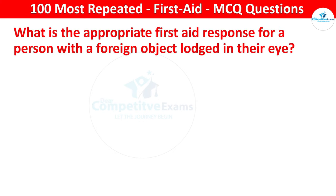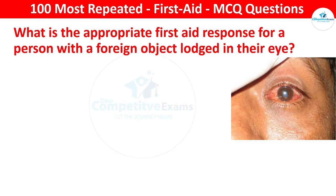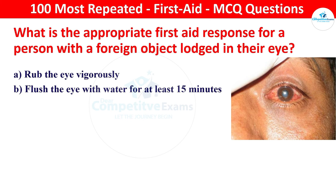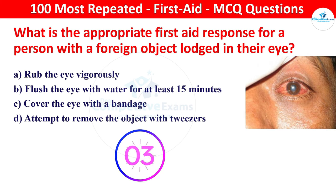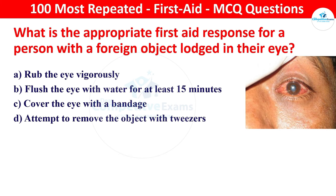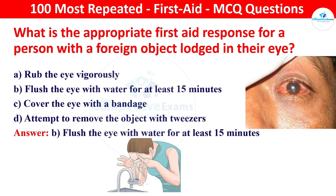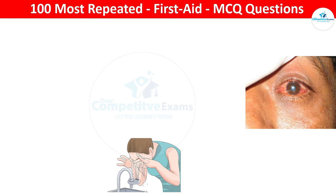Next question: what is the appropriate first aid response for a person with a foreign object lodged in their eye? Your options: rub the eye vigorously, flush the eye with water for at least 15 minutes, cover the eye with a bandage, or attempt to remove the object with tweezers. The right answer is flush the eye with water for at least 15 minutes. Flushing the eye helps to remove the foreign object and minimize damage.